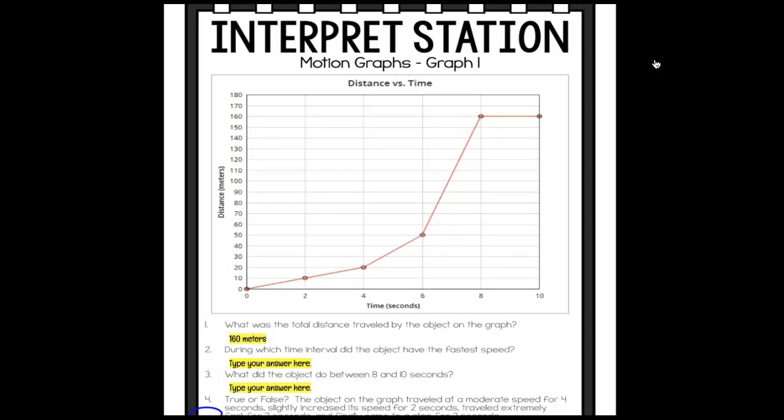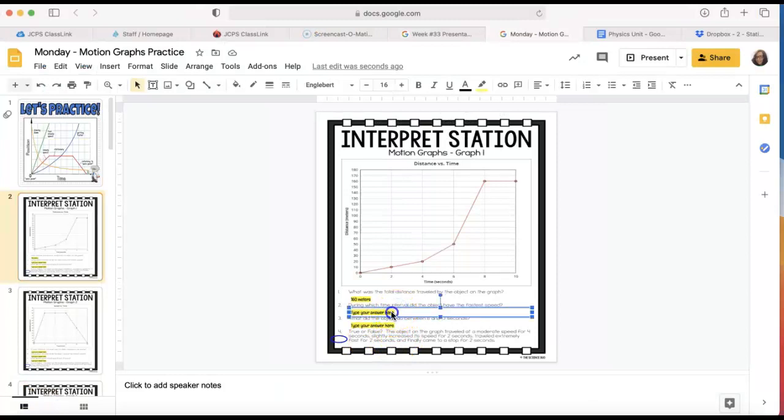During which time interval did the object have the fastest speed? You can calculate it and do distance divided by time. On the first segment, we have that it went 10 meters divided by 2 seconds, that would be 5 meters per second. Then it took 2 seconds to go 10 meters, same speed. Here it went 30 meters in 2 seconds, so 30 divided by 2, that's 15, it got faster. But you can clearly see how steep this line is and how much distance it gained. The time interval that that happened was between 6 and 8 seconds.